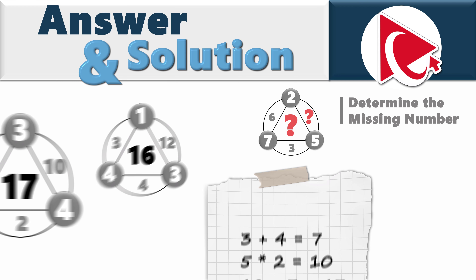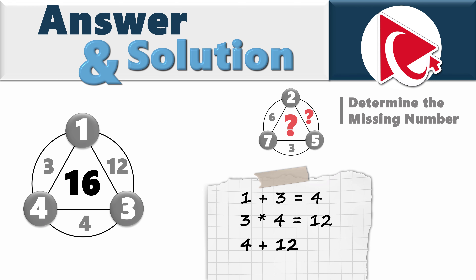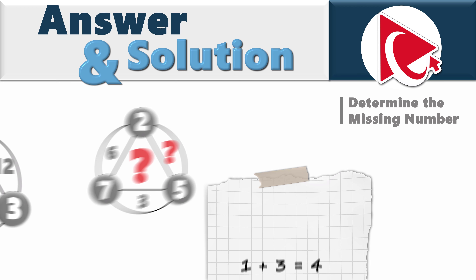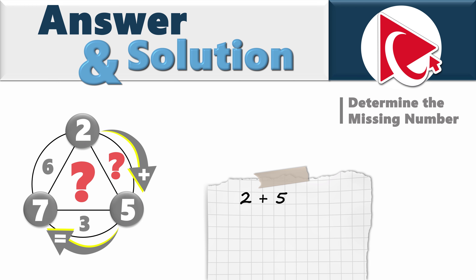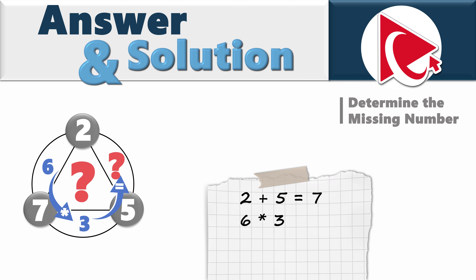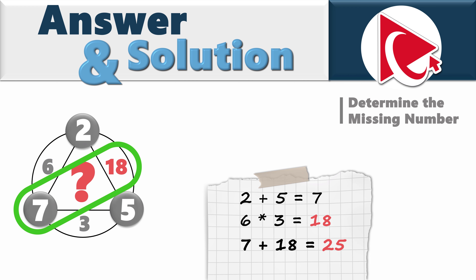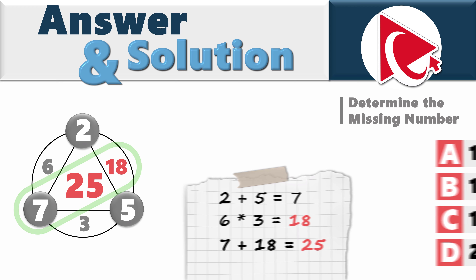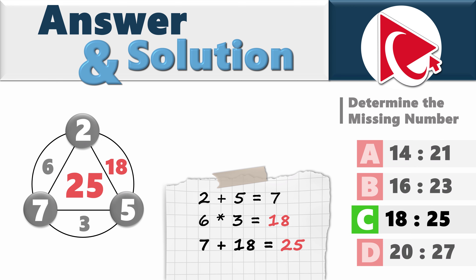Make sure you verify the pattern in the middle shape. Switching to the third shape, which has two numbers missing: 2 plus 5 equals 7. These are the calculations in small circles. 6 multiplied by 3 equals 18. These are the calculations inside the large circle. And 7 plus 18 equals 25. So the correct answer here is Choice C, numbers 18 and 25.